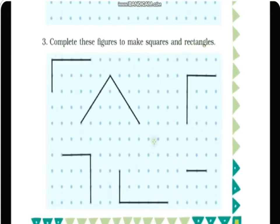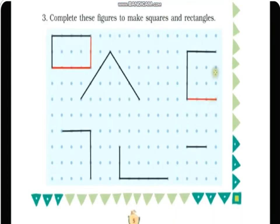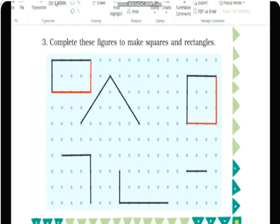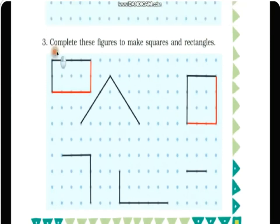Next exercise: complete this figure to make squares and rectangles. Half portions are given and we have to complete them, also mentioning whether the shape is a square or rectangle. I'm drawing the remaining part — this one uses four dots on each side, meaning equal line lengths. That tells us this shape is a rectangle, so I'll write 'rectangle' here.